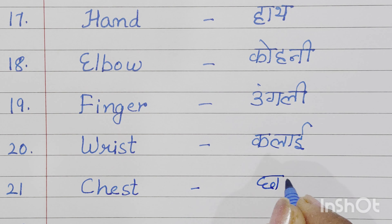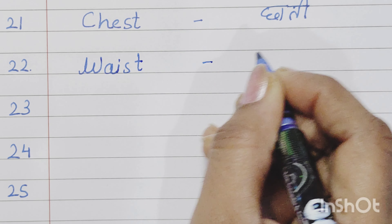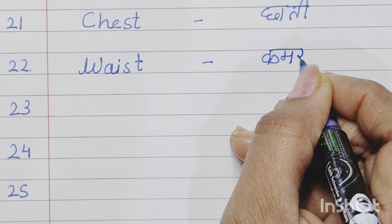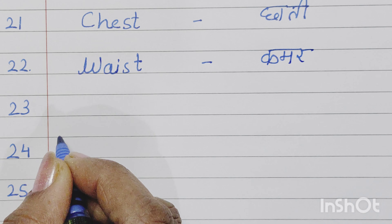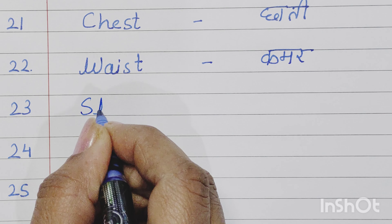Thirteenth number is lips, L-I-P-S, lips means hont. Fourteenth is shoulder, S-H-O-U-L-D-E-R, shoulder means kandha.